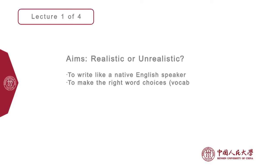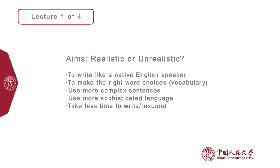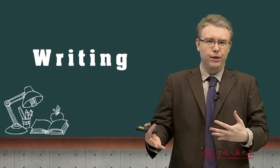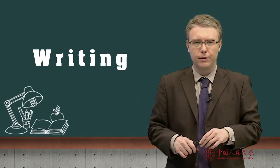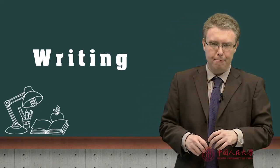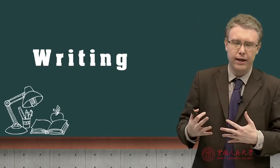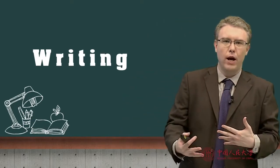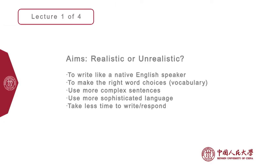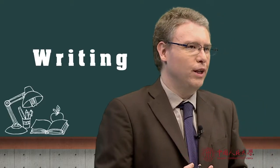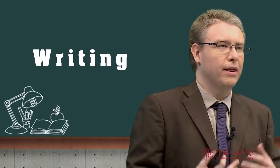So what are our aims? Are they realistic or unrealistic? An unrealistic aim is to be able to write like a native English speaker. Writing business emails and presentations in professional English does require a lot of practice. Ordinary people really don't have much of a clue when it comes to writing professional emails — they just do their best, and that's really all you can do.